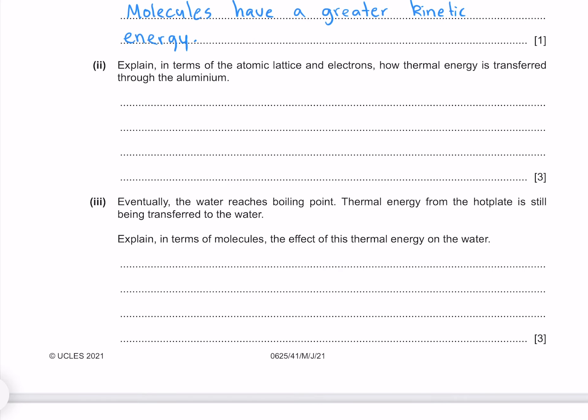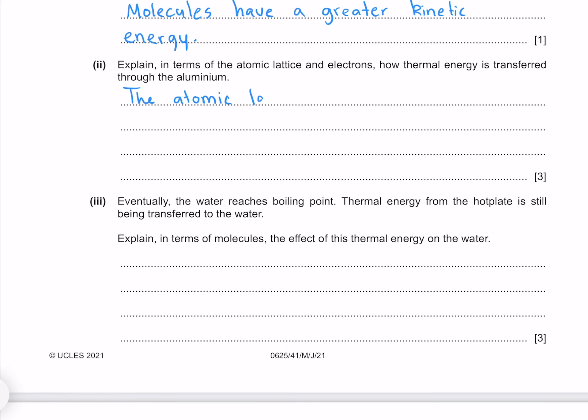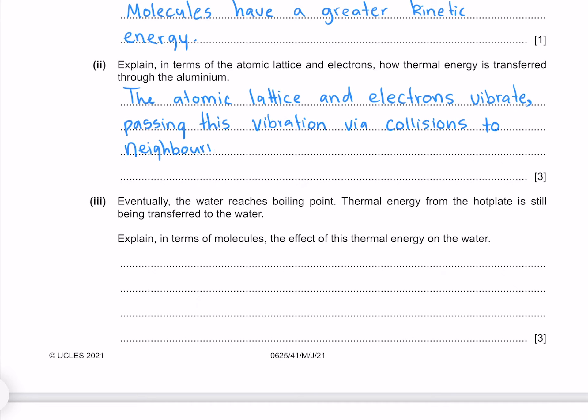Explain in terms of the atomic lattice and electrons how thermal energy is transferred through the aluminium. The atomic lattice and electrons vibrate, passing this vibration via collisions to neighbouring atoms, sharing their thermal energy.